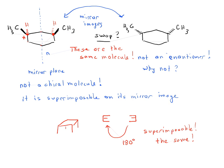So the simple rule for drawing the enantiomer of a compound: flip all the stereocenters. The only thing to watch out for is cases where your molecule has a mirror plane — these are called meso compounds. A meso compound has stereocenters or chiral centers but also has an internal mirror plane. Watch out for those, because the mirror images of meso molecules are actually the same molecule. Hope you found this trick useful.